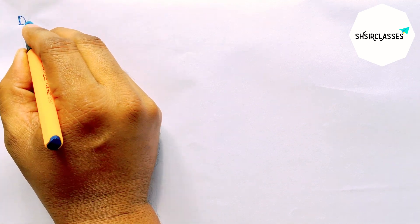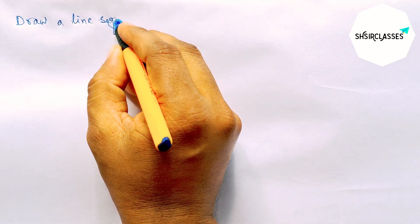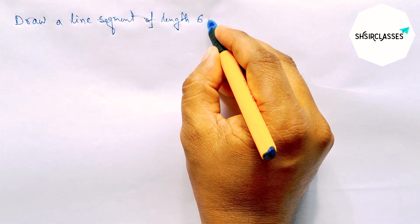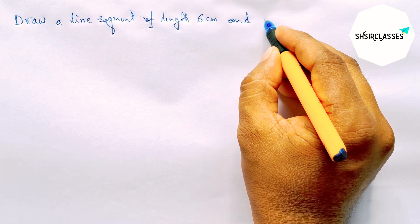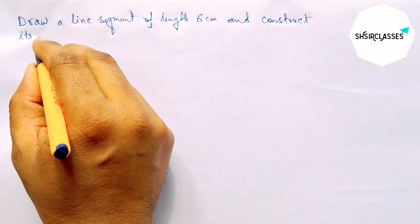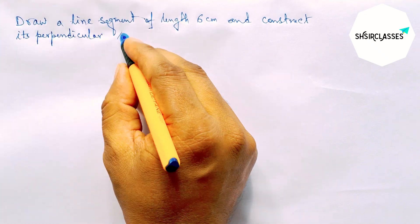Hi everyone, welcome to Say Share Brushes. Today in this video, draw a line segment of length 6 centimeters and construct its perpendicular bisector in an easy way. So please watch the video till the end.